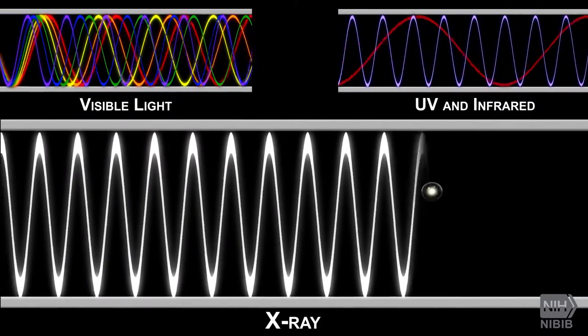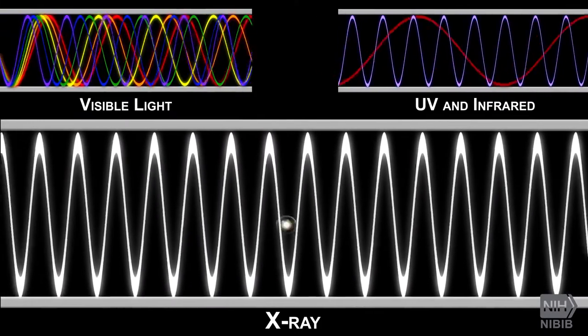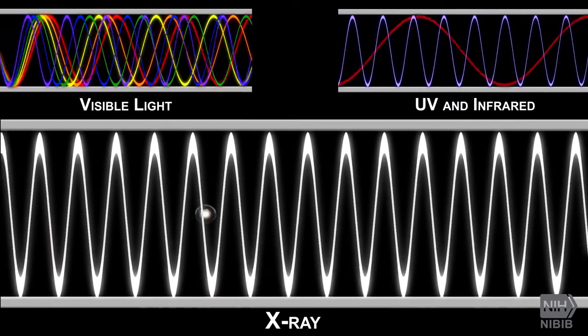X-rays have very short wavelengths that, unlike visible light, are able to pass right through most tissues in the human body.